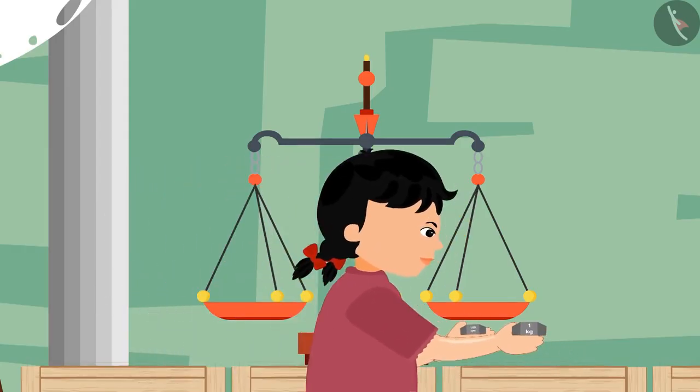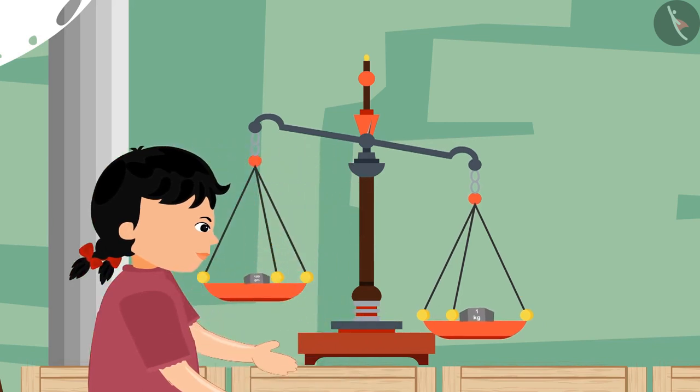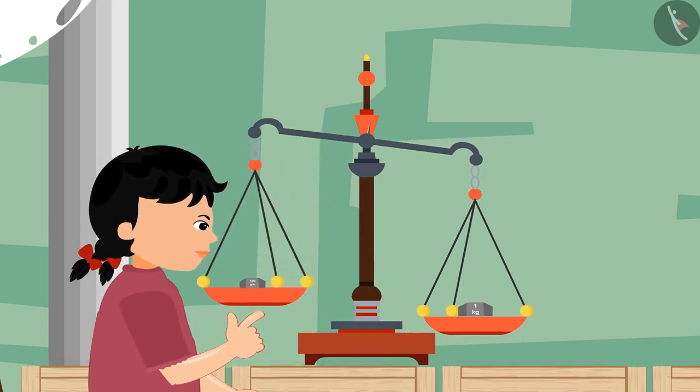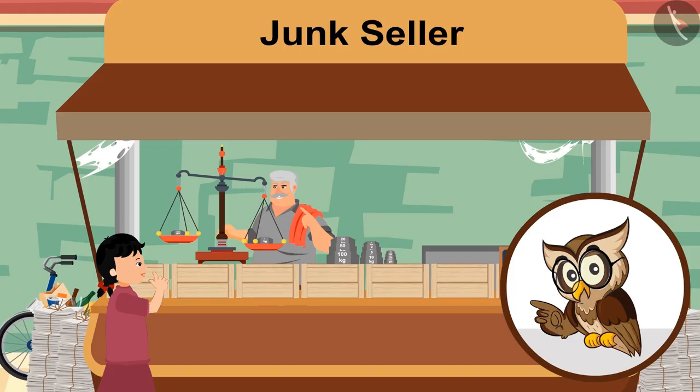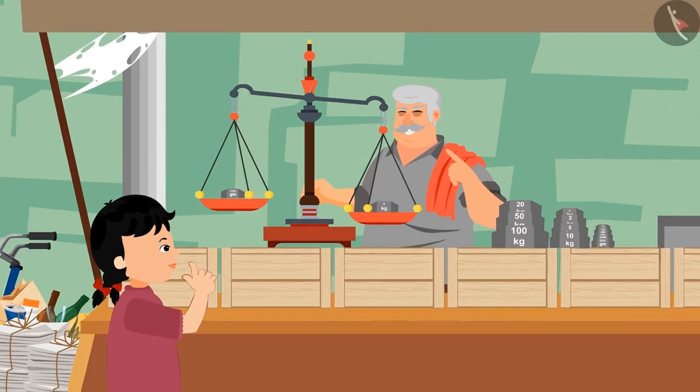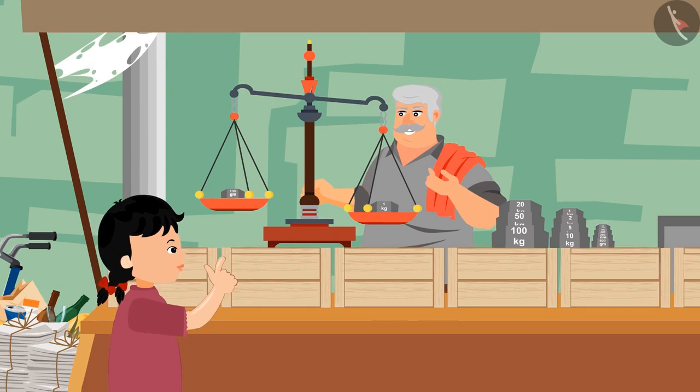Let's see what Neetu is doing today. She has put some stones on the weighing scale and is looking a bit worried. Birju uncle is looking at her. Hey kid, what happened? What are you doing?